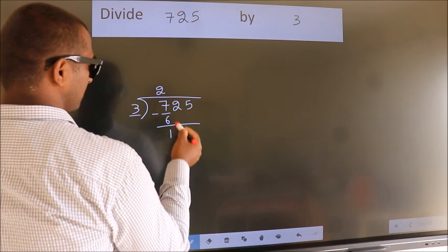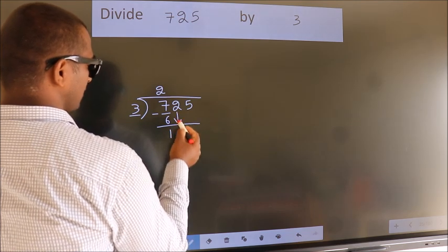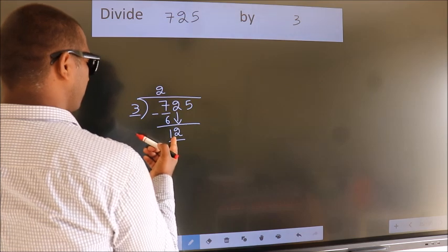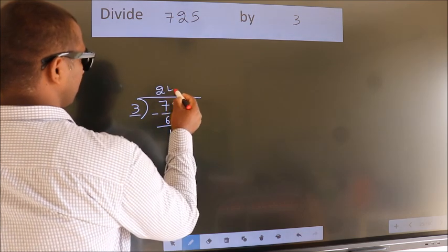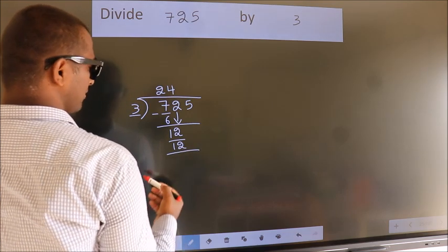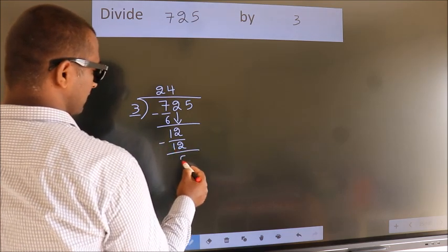After this bring down the beside number. So 2 down, so 12. When do we get 12? In 3 table. 3 times 4, 12. Now we subtract. We get 0.